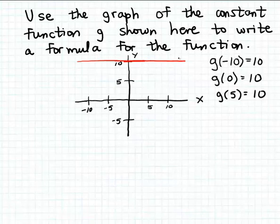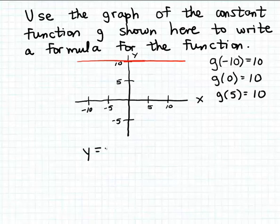The graphs of constant functions turn out to be horizontal lines. That's easy to see why — because the output never changes. Nevertheless, constant functions are linear functions, so in writing down the formula for this constant function we want to keep that in mind.